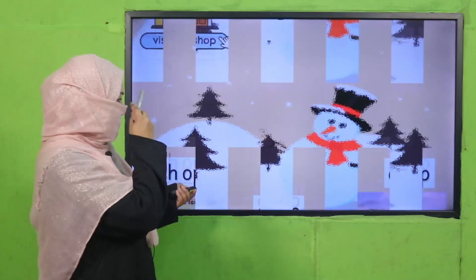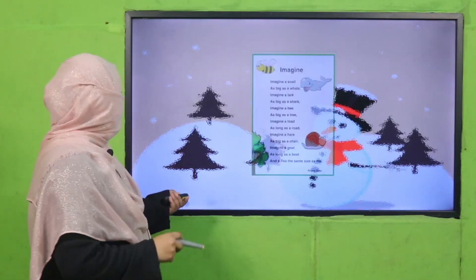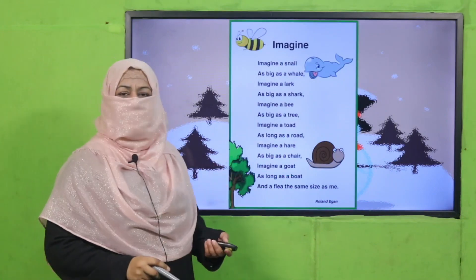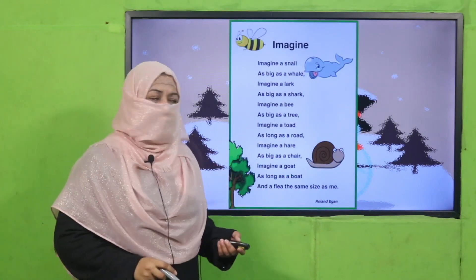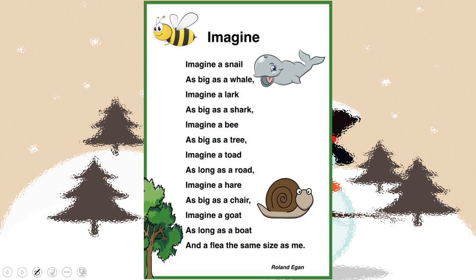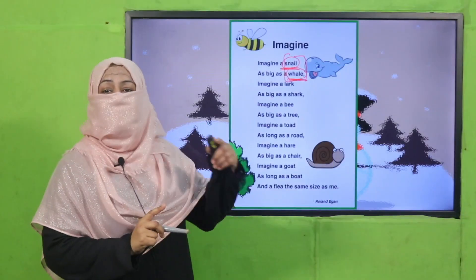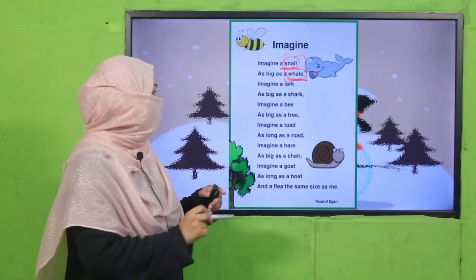Now you see all these words — shop, drop, crop — have the same ending sound, that's why they are rhyming words. The next example: look at this — 'snail' and 'whale.' Do they sound the same? Snail, whale — though the spellings are different, because they have the same ending sound they are rhyming words. This is how we identify rhyming words.